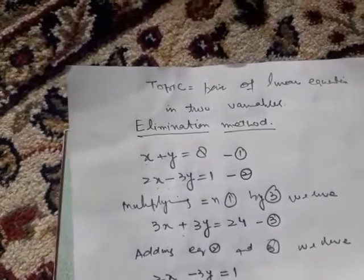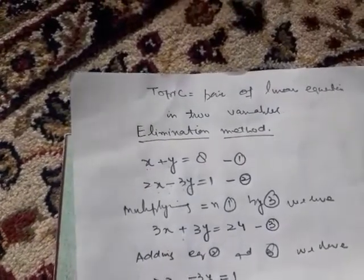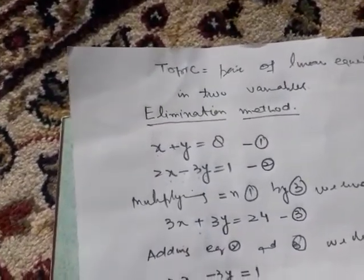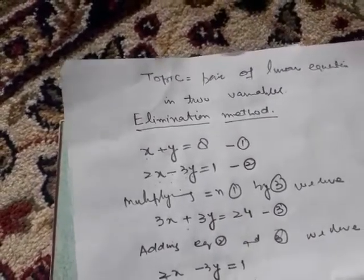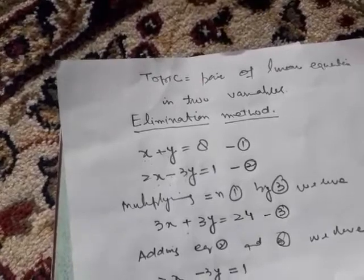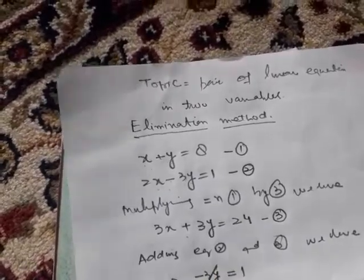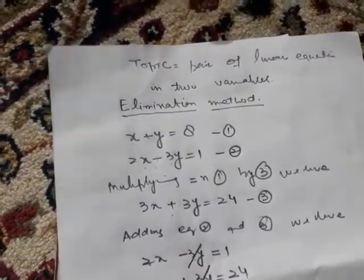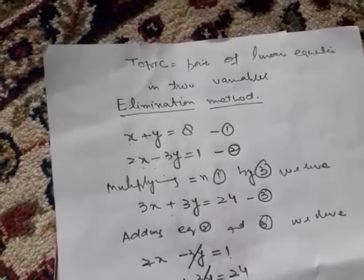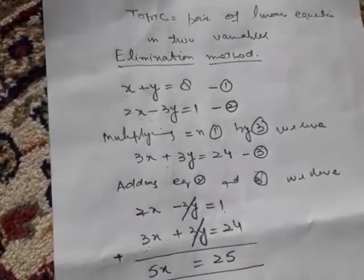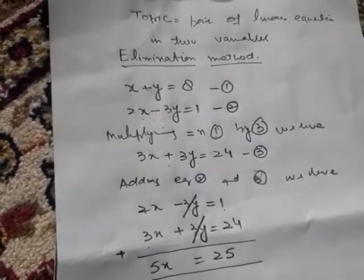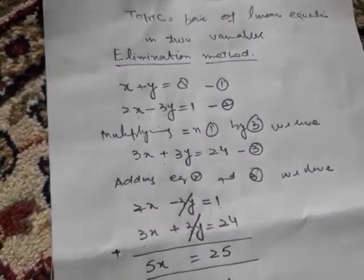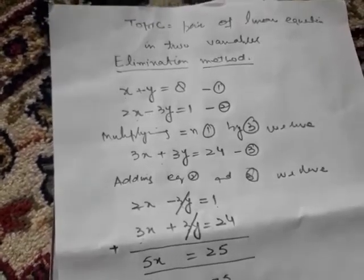Adding these: 2 plus 3 equals 5x, the y terms cancel out, equals 25. So now x equals 25 divided by 5, x equals 5.